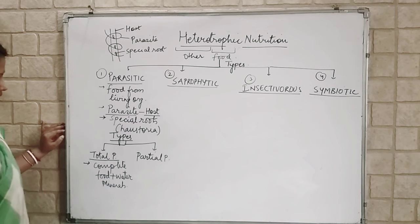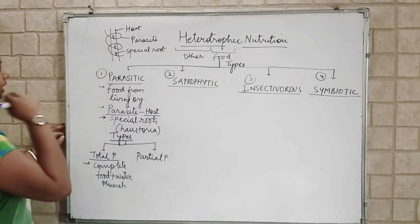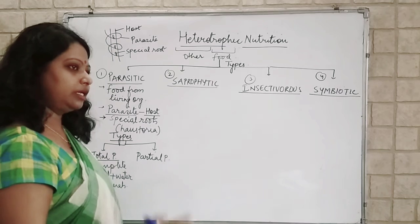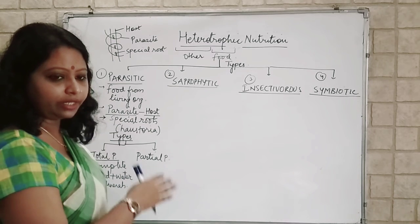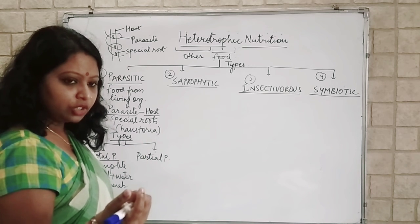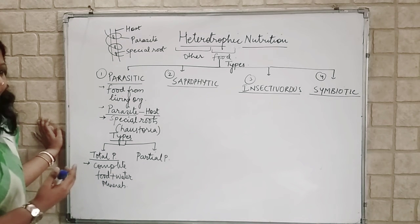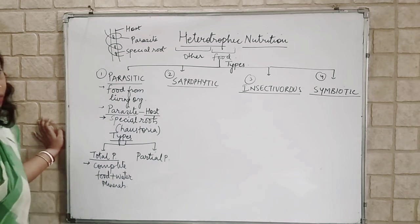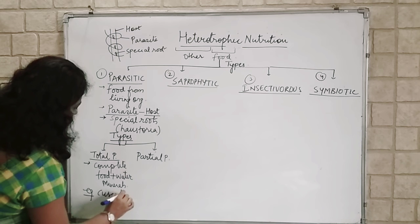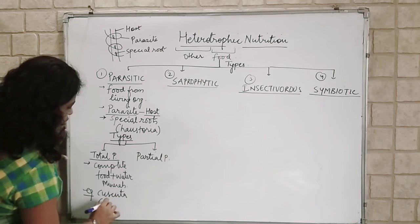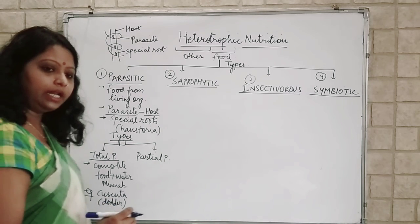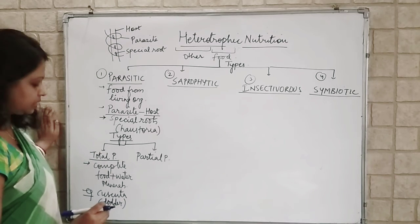Total parasites do not have well-developed roots or other body parts like leaves, so they cannot prepare their own food. They have only some part of their stem growing. Example for total parasite is Cuscuta, which is also known as Amarbel or 'daughter plant' — these are common names.